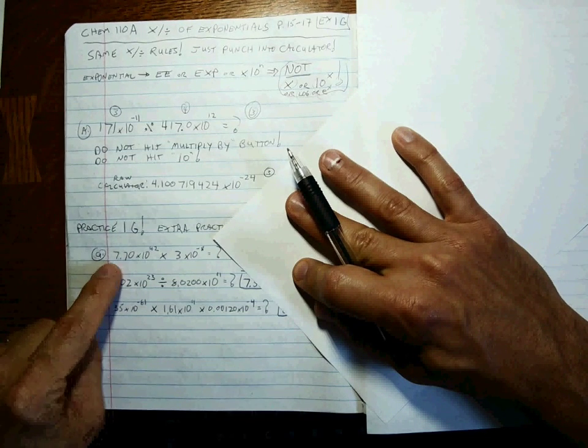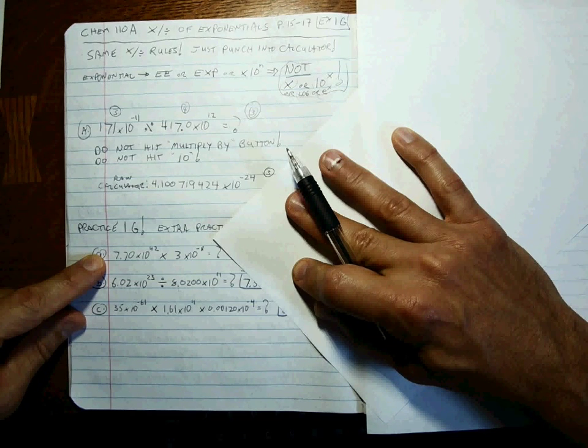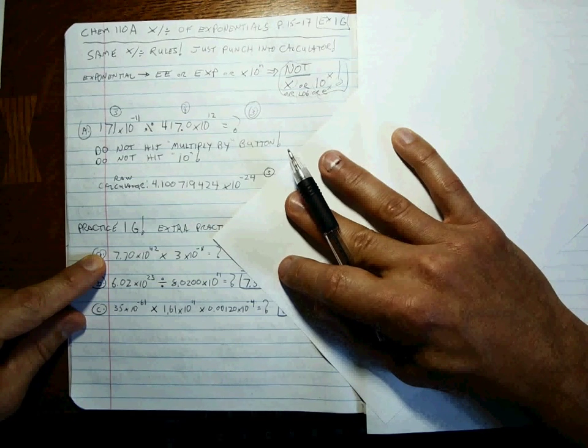Okay, 7.70 times 10 to the 42nd times 3 times 10 to the minus 8th. What's that answer?